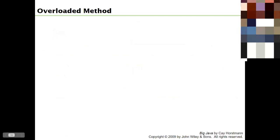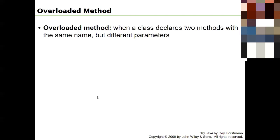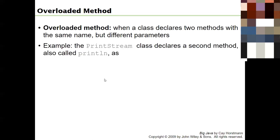A method is defined not just by its name but also by the number of parameters it takes and the data type it returns. This is the concept of an overloaded method: when a class declares two methods with the same name but different parameters, that's considered overloaded - multiple meanings. For example, the PrintStream class has two println methods: one for printing numbers and another for printing strings.